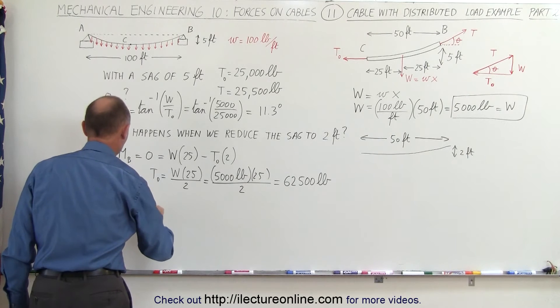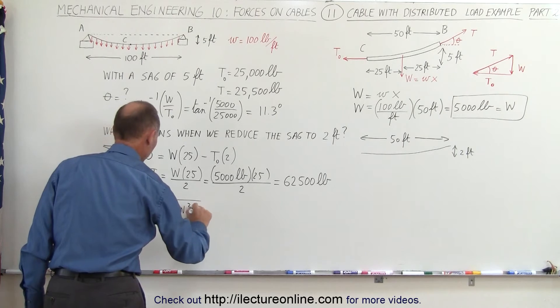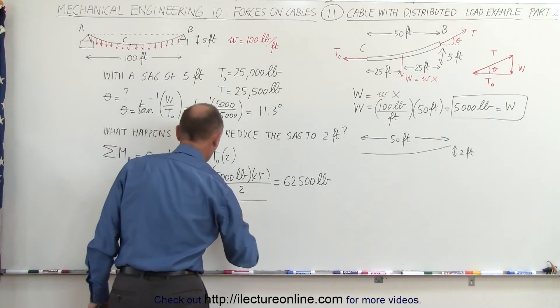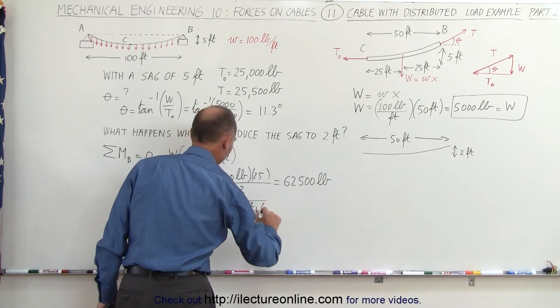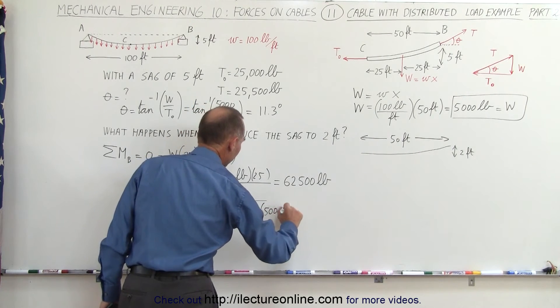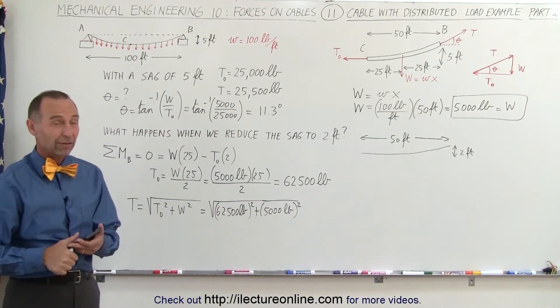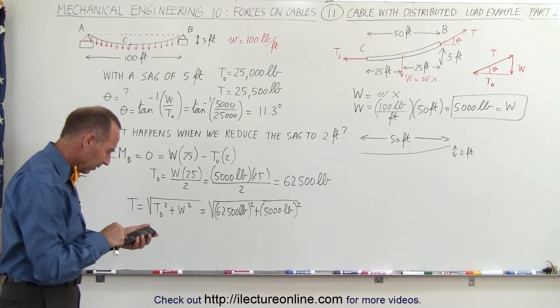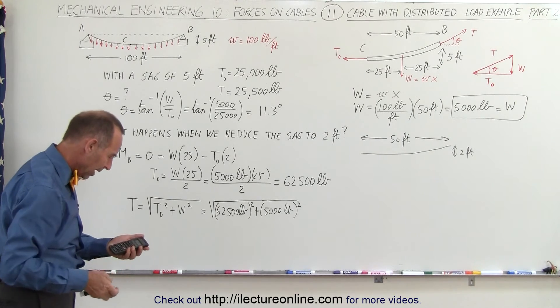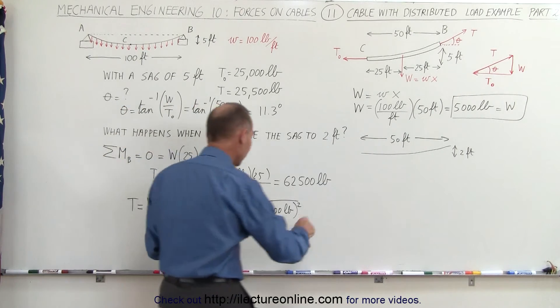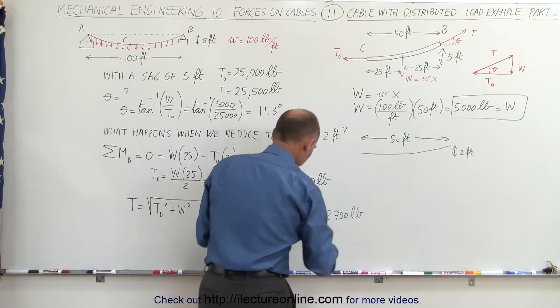Now let's also calculate T. T just like before is equal to the square root of T sub not squared plus the load squared. This is equal to 62,500 pounds, we square that, plus 5,000 pounds. And you can see of course that the 5,000 pounds is very small compared to 62,500. So we square that out plus 5,000 squared, take the square root, and we end up with just about 62,700 pounds.